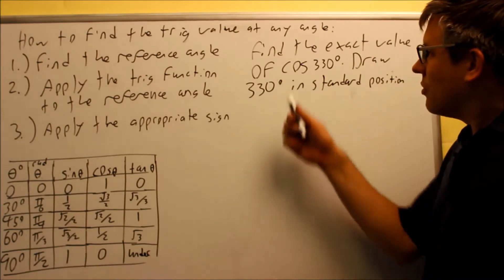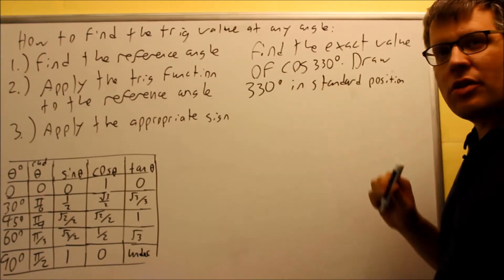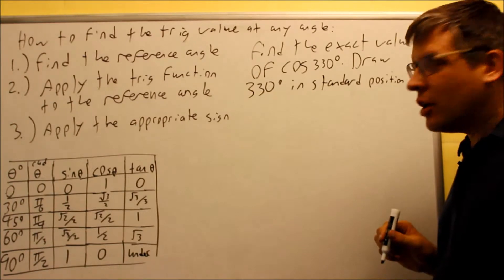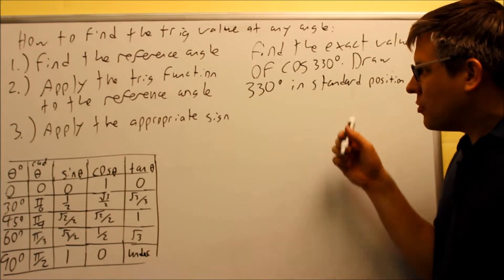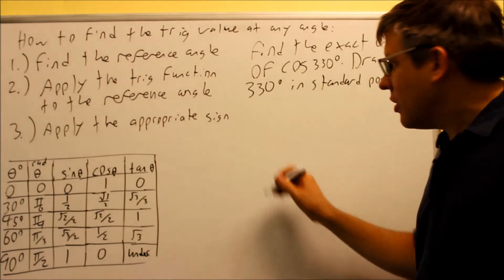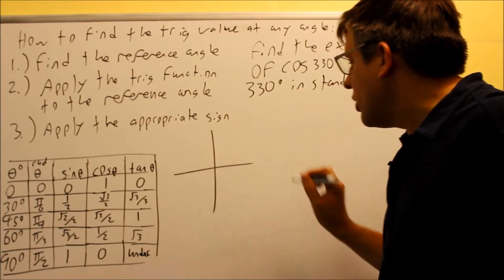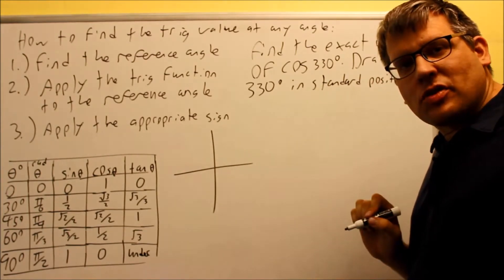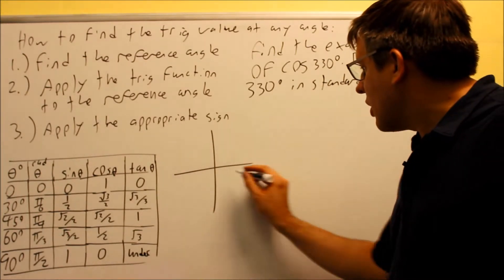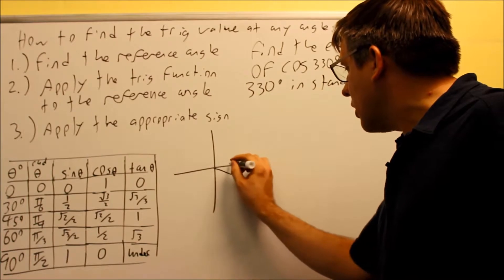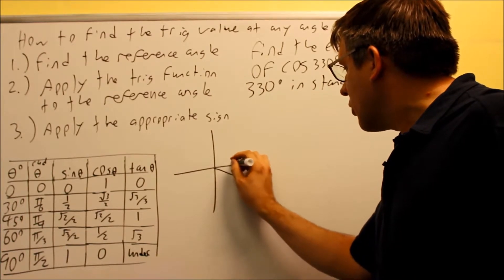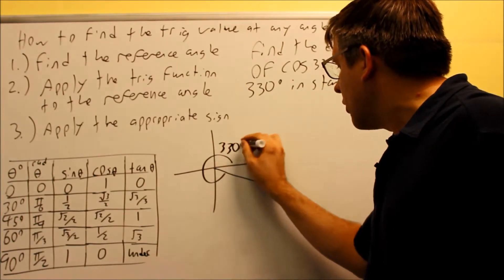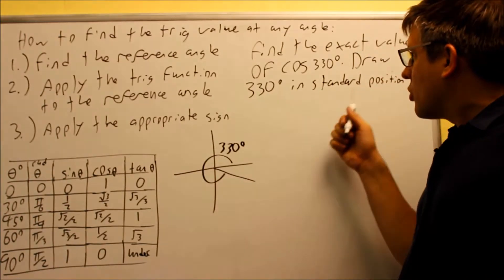Next example: find the exact value of cosine 330, and draw 330 in standard position. 330 is an angle between 270 and 360, which means 330 is drawn down in the fourth quadrant. Here is our angle for 330. That completes the first part.